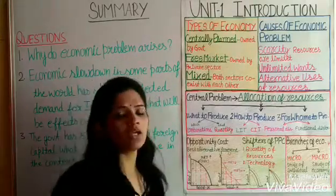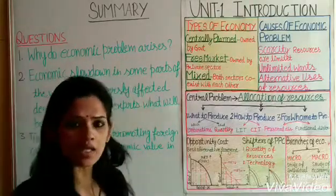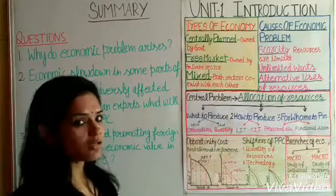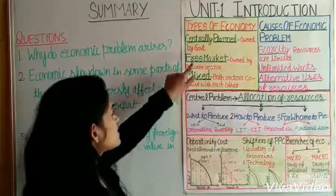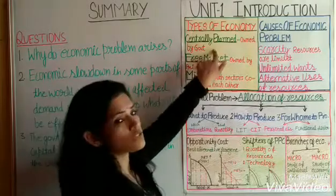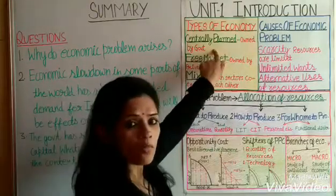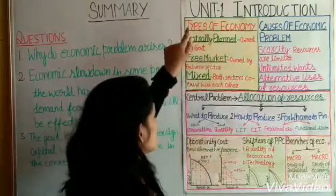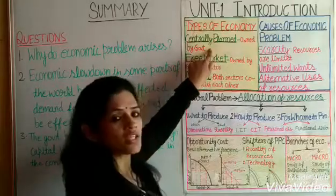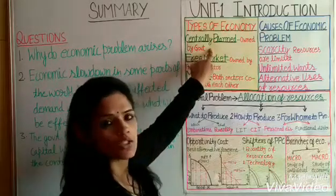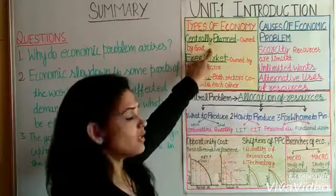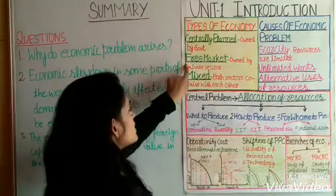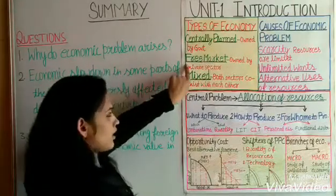Centrally Planned Economy is owned by the Government Sector. This means all resources are controlled by the Government Sector. The main objective of this economy is Social Welfare and National interest.